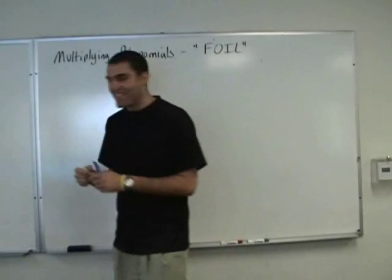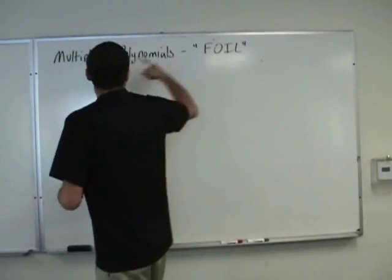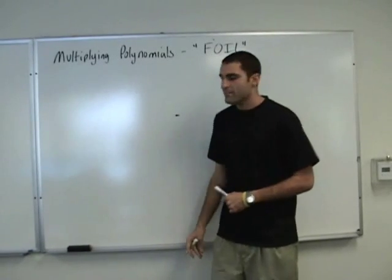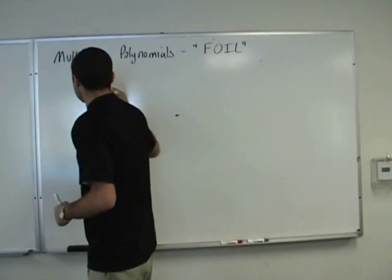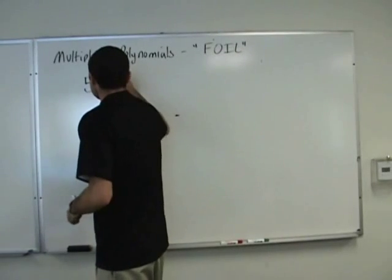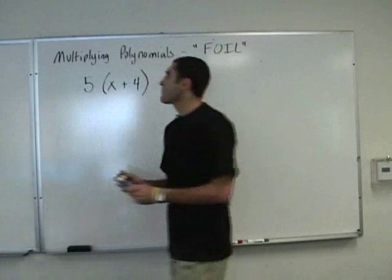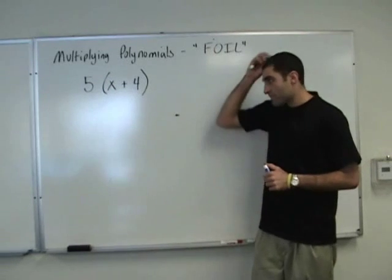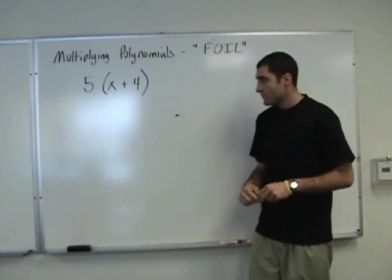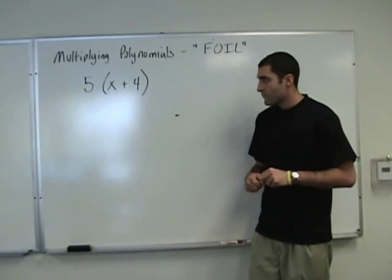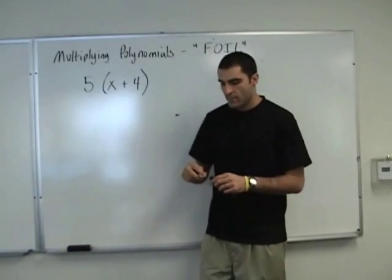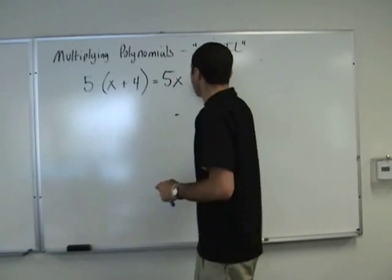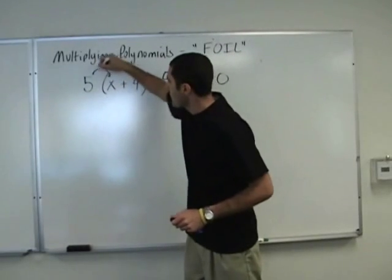Multiplying polynomials is the same as distributive property, except it's a distributive property party. So, if you could please write the following. We're going to build onto this property. Who can distribute this? 5x plus 20. That was a brief intro on distributive property.